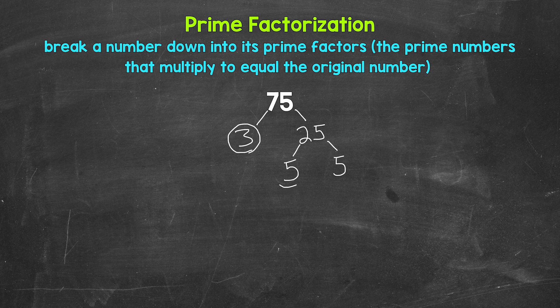Five is a prime number, so we are done here and here. And that's the prime factorization of 75. We can't break anything else down any further. We have all prime numbers.